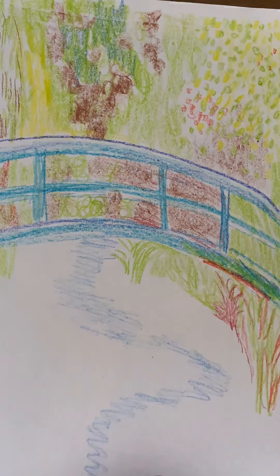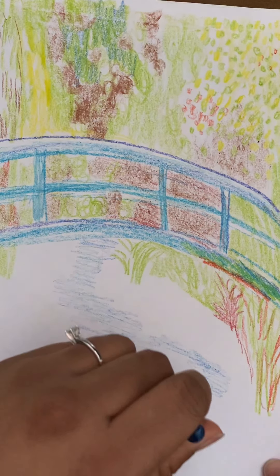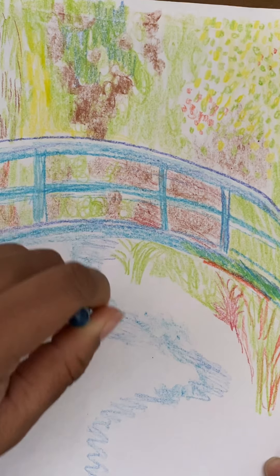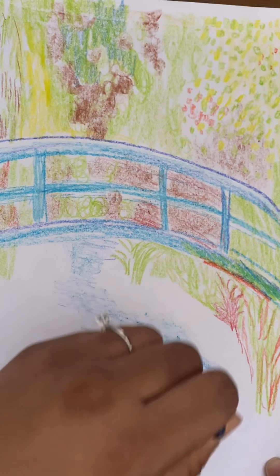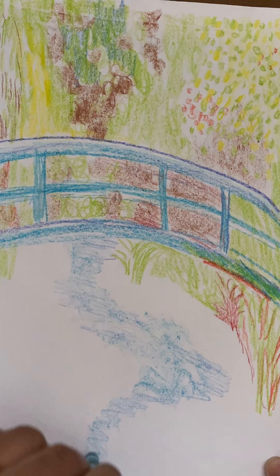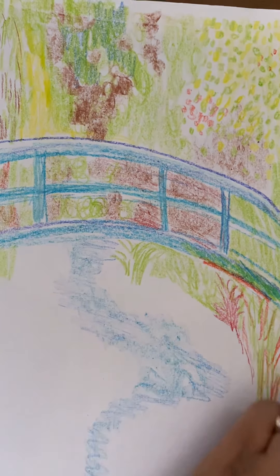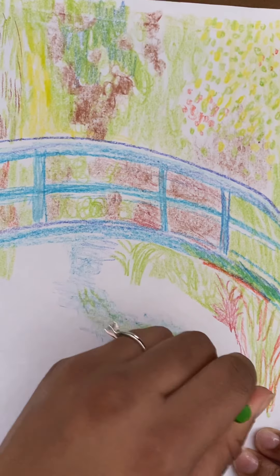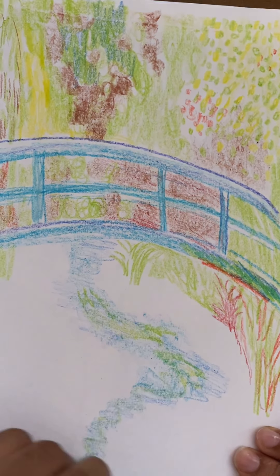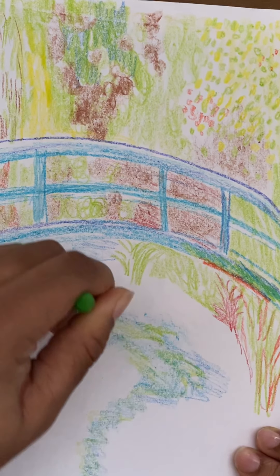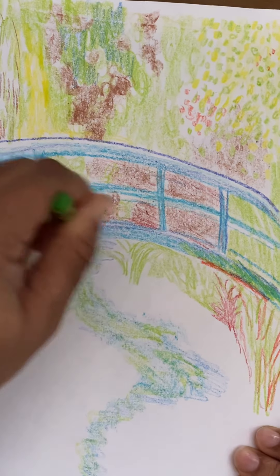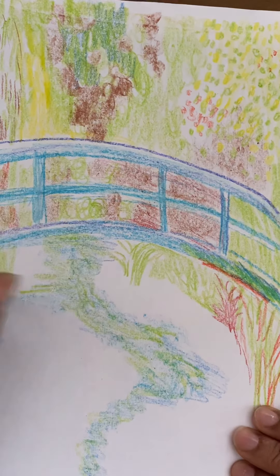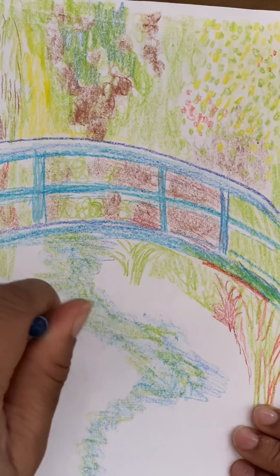So let's get some more blue in here. And there's a reflection of what is happening here in the water. So there's a little bit of green in the water also where it's reflecting what's happening above. And it goes off to the side like so.